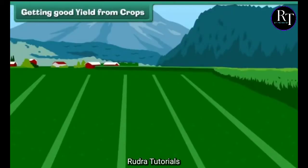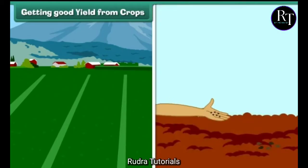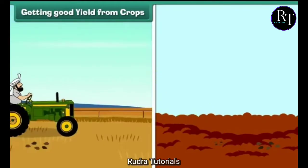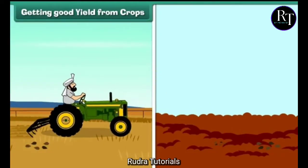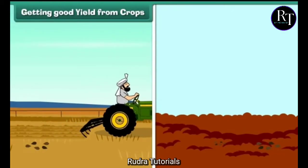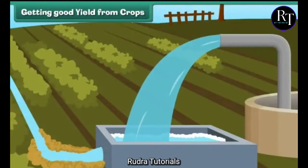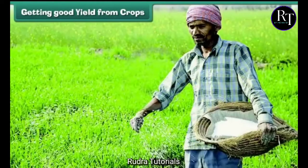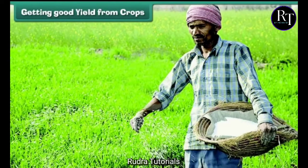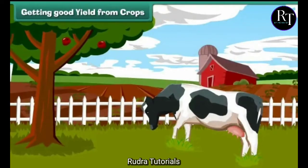Getting good yield from crops. To get a good yield from crops, the following things should be kept in mind: healthy seeds of the best variety should be used; before sowing, soil should be prepared by plowing and adding manure or fertilizers; soil should be watered at the right time and with the right amount of water; crops should be protected from diseases, harmful insects, and animals; insecticides and pesticides should be sprayed in correct quantities.